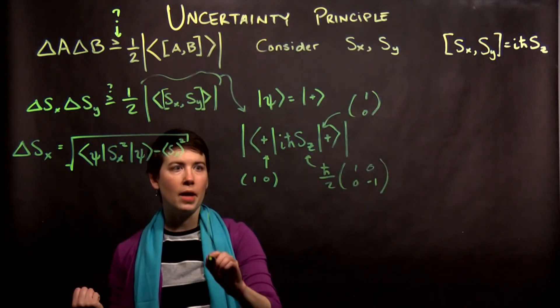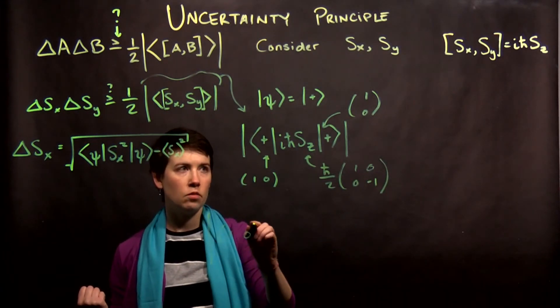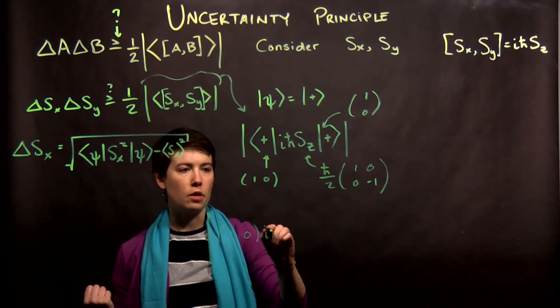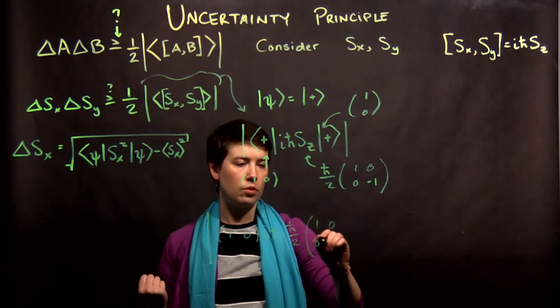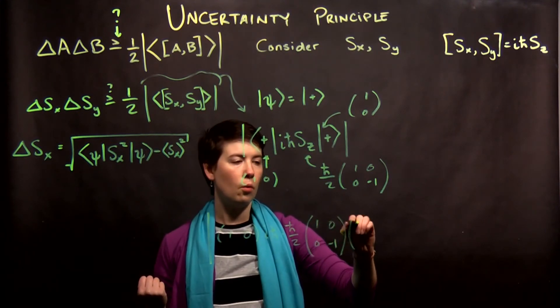So, what we're going to have, then, is the magnitude of 1, 0, i h-bar, h-bar over 2, 1, 0, 0, negative 1, 1, 0.